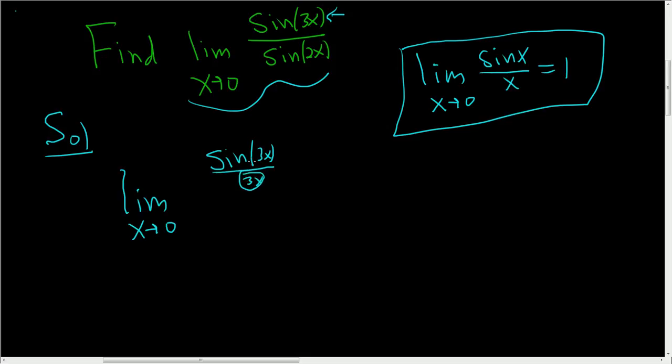Why? Because we want these to be the same so we can use this formula. See, here we have x, x. Here we have 3x, 3x. When we do that, we have to get rid of this 3x. We can't just put it there, so we have to fix it.